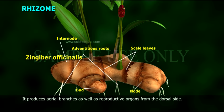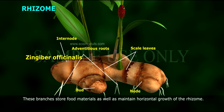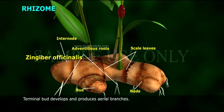It produces aerial branches as well as reproductive organs from the dorsal side. Axillary buds develop into branches. These branches store food materials as well as maintain horizontal growth of the rhizome. The terminal bud develops and produces aerial branches.